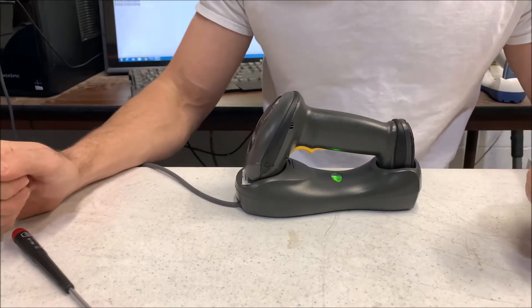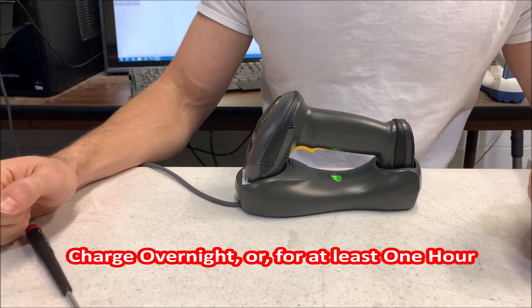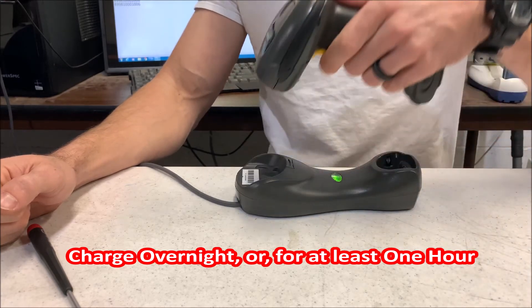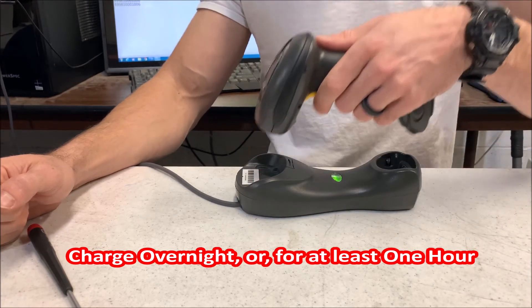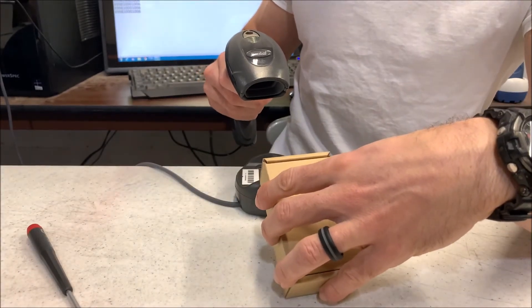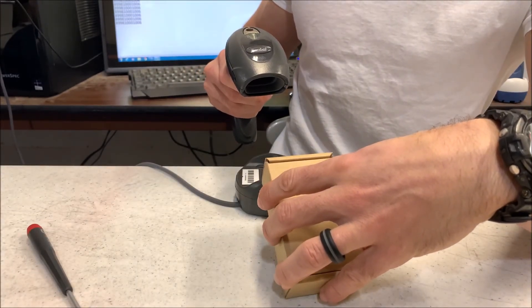Then place the scanner in the cradle to charge. The green light on the top of the scanner will begin to flash to show it's charging. Scan the wireless pairing barcode on the cradle to pair the connection, and now you're ready to scan barcodes into your computer.